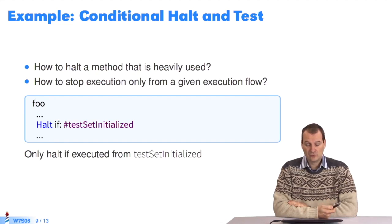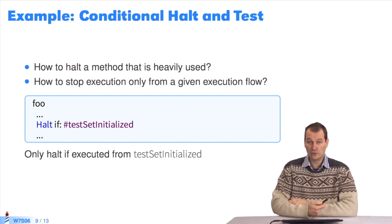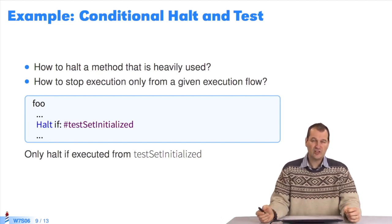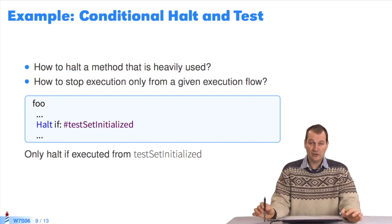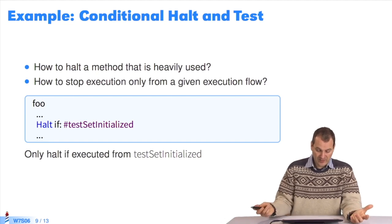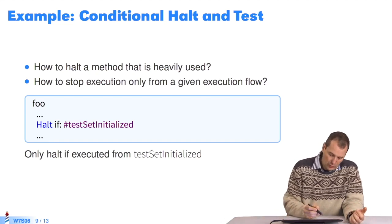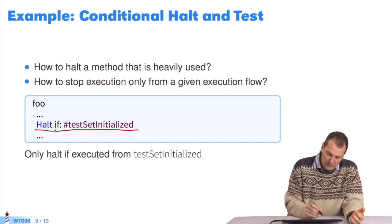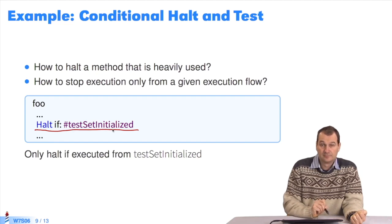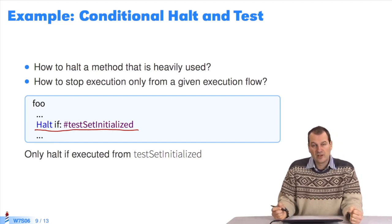Conditions like halt once will interrupt the system once. But what you want is to halt execution only if the method has been called by another method. How does a programmer express this? We express that we only want to halt if foo has been called by the method testSetInitialized.